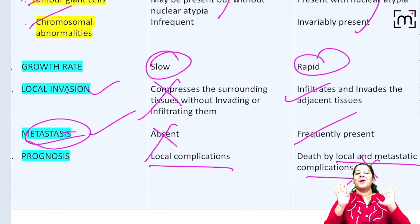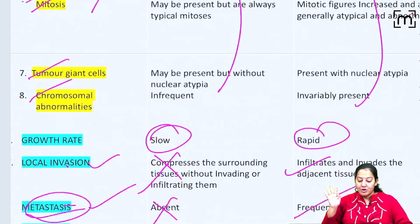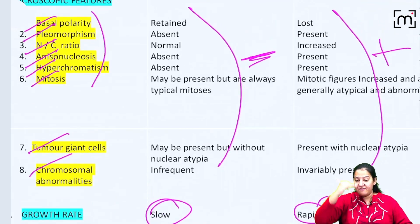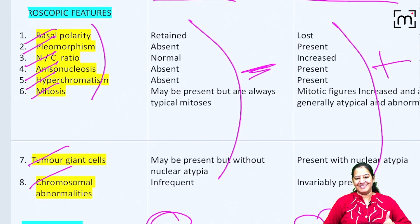That is all about the differences between benign and malignant tumours. You must know the 10 features of anaplasia. Thank you.